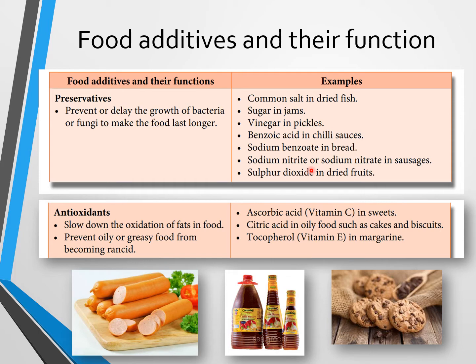What is the difference between nitrite and nitrate? Nitrite is NO₂⁻ and nitrate is NO₃⁻ — the difference is the number of oxygen atoms. Another example is sulfur dioxide, SO₂, used in dried fruits. Now we go to the second type of food additive, which is antioxidants.